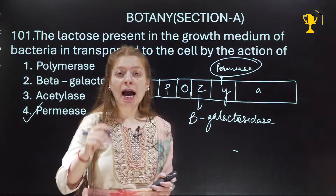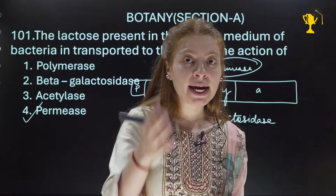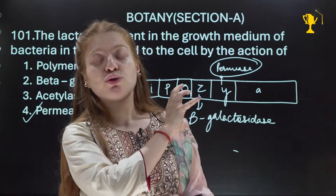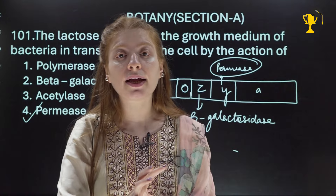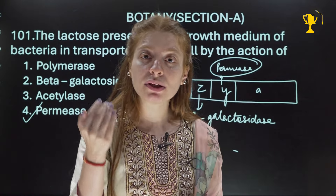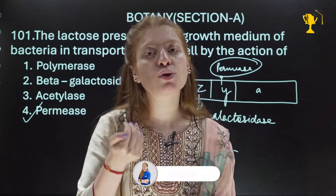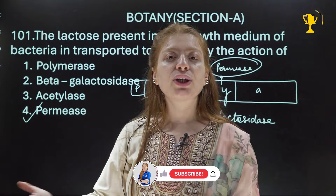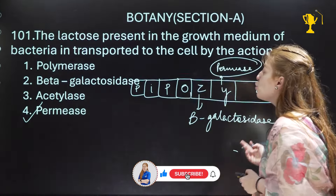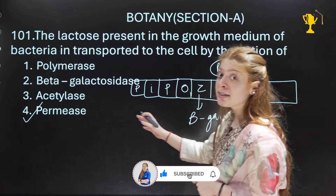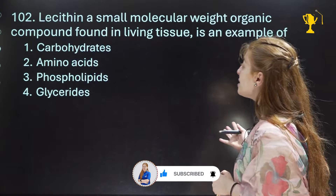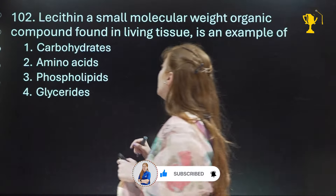As clearly written in NCERT, a little transcription keeps happening even in the absence of lactose — this is leaky expression. Due to that, a small amount of permease is produced. Then as the operon fully activates, more permease is produced. So the answer is Option 4.